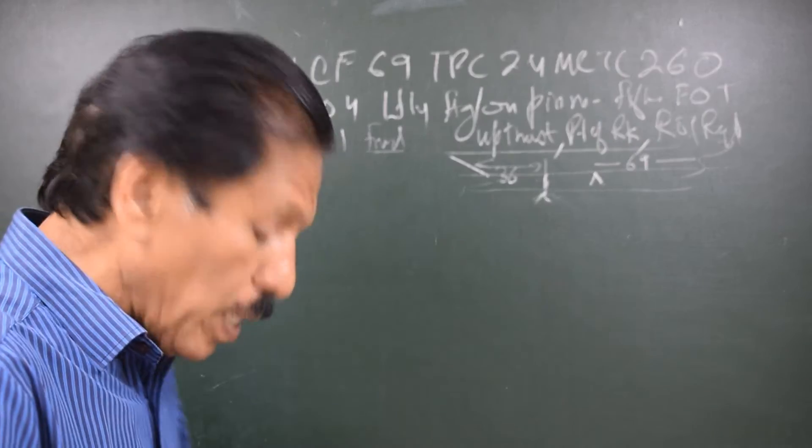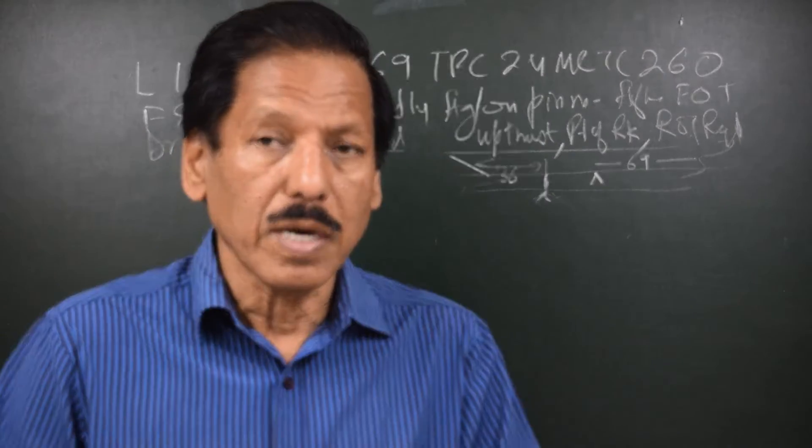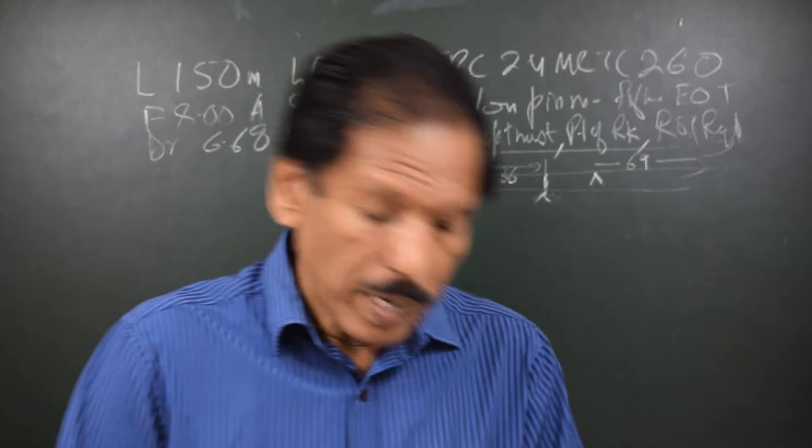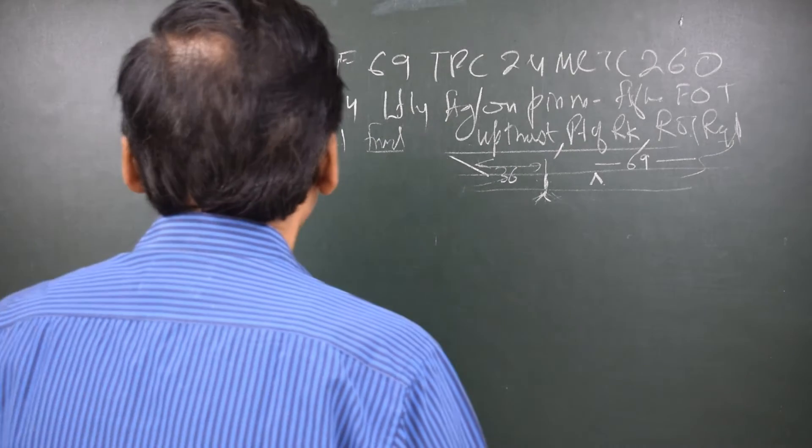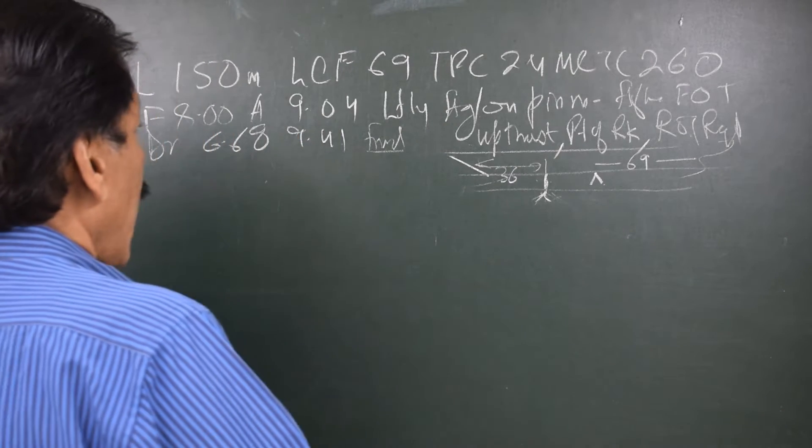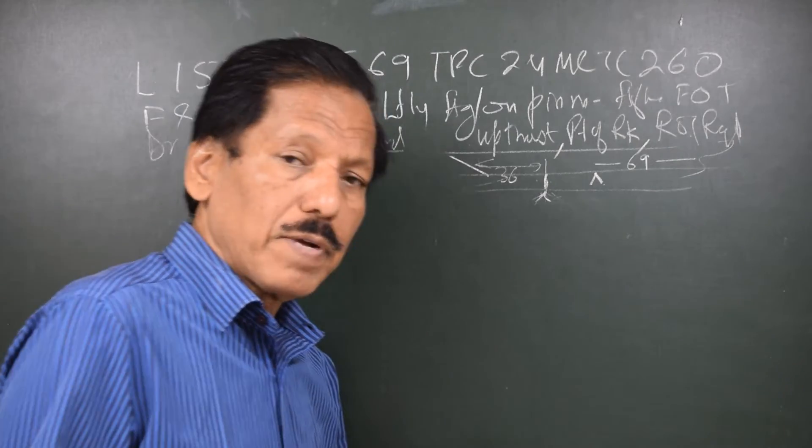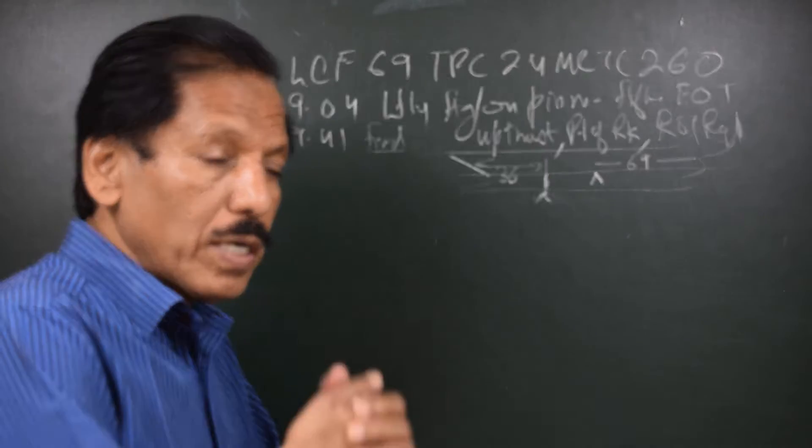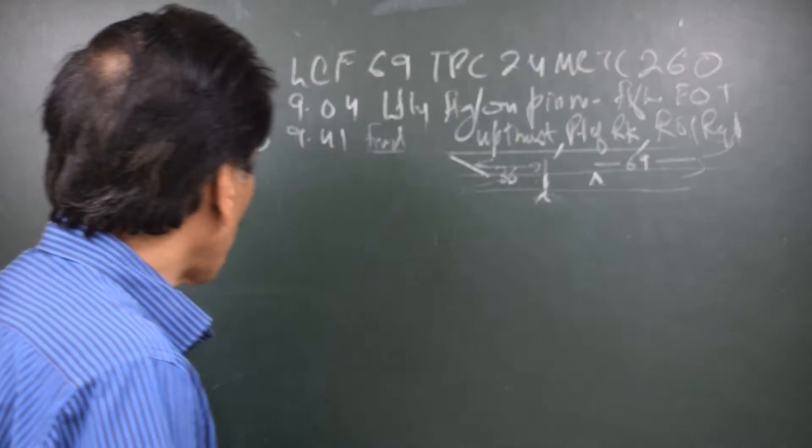First, let me remind you that in any trim-based question or grounding question, we must use the formula of TPC and the formula of MCTC. The golden rule is: change of hydrostatic draft into 100 TPC is the cargo discharged or the thrust that is caused.